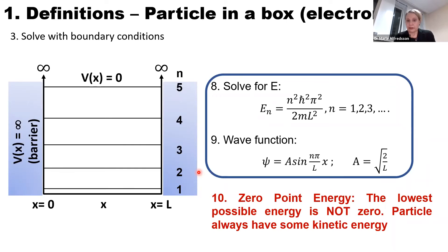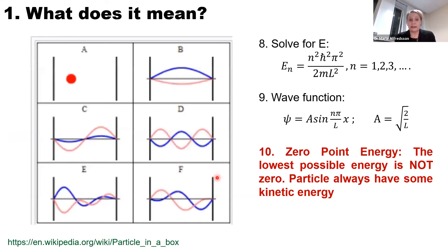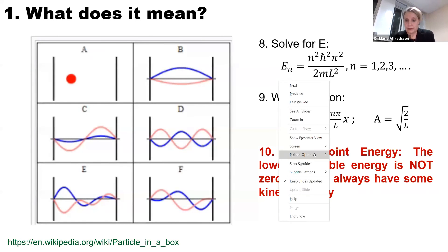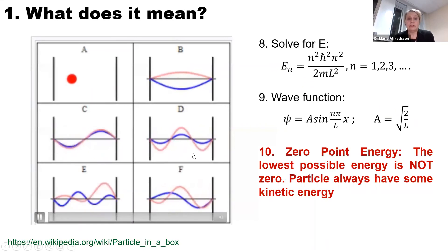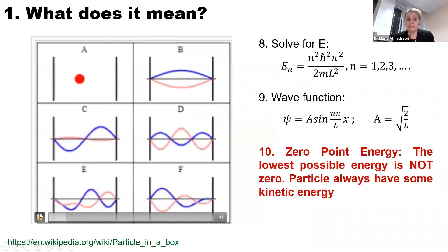What about the wave function then? The wave function we said was given by this sinus function, which also depends on this quantum number n. We put that one in, we get n equals one, two, three and so on. If we look at this, these wave functions will look differently for n equals one, two, three, four, five and so on. So the wave function will look differently.